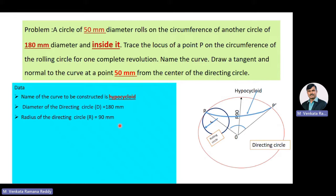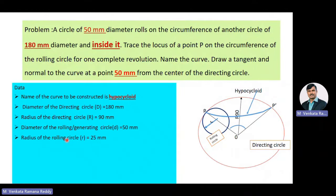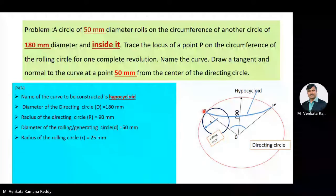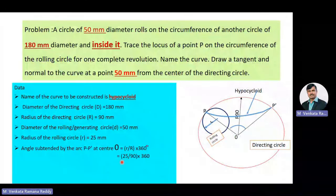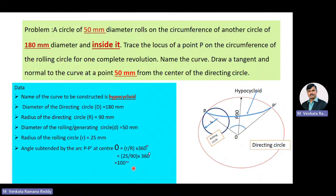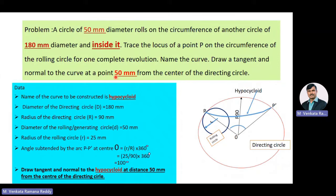The diameter of the rolling circle (also called the generating circle) d = 50 mm, and the radius of the rolling circle r = 25 mm. The angle subtended by the arc PP' at center O is calculated using the formula: (r / R) × 360°. Here r = 25 mm and R = 90 mm, giving (25/90) × 360° = 100 degrees. Additional data: draw a tangent and normal to the curve at a point 50 mm from the center of the directing circle.